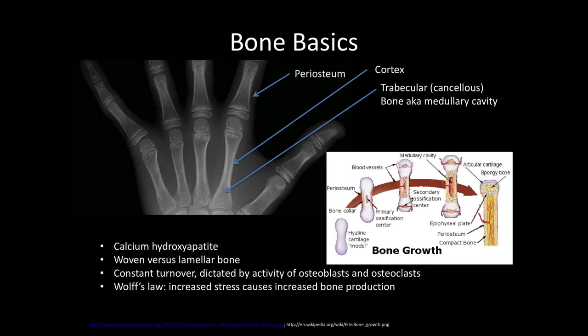Bone is mostly composed of calcium hydroxyapatite in terms of crystal formation. You start out with a woven layer of bone that gets transformed to lamellar bone. When looking at healing, a lot of times orthopedic surgeons order films to assess for healing, and we can see these things. There is a constant turnover of the bone matrix, dictated by the activity of osteoblasts, which form bone, and osteoclasts, which take bone away. Wolff's Law states that increasing stress causes increased bone production — the body optimizes and puts strength where it's needed.